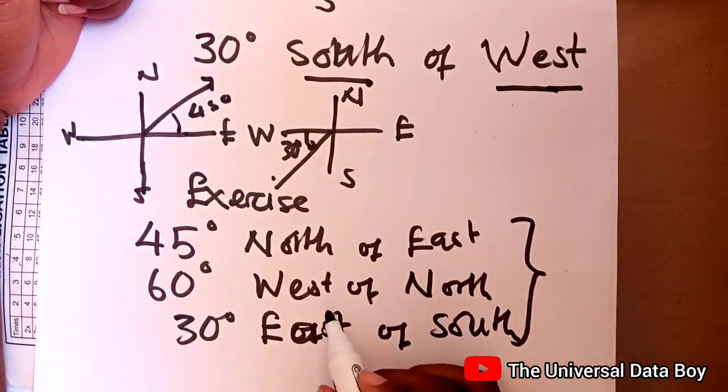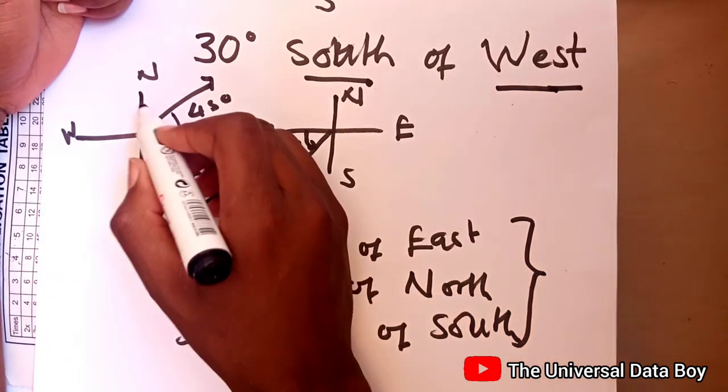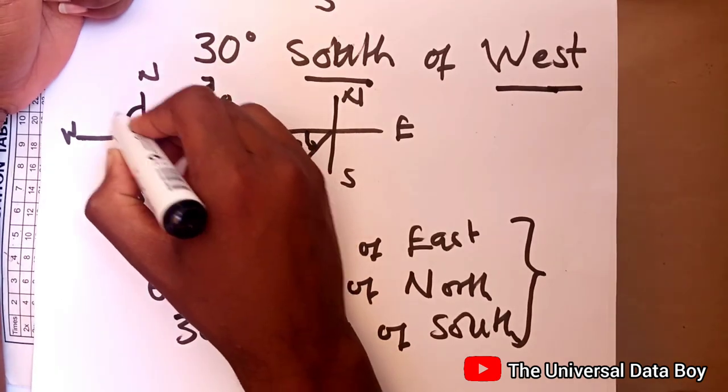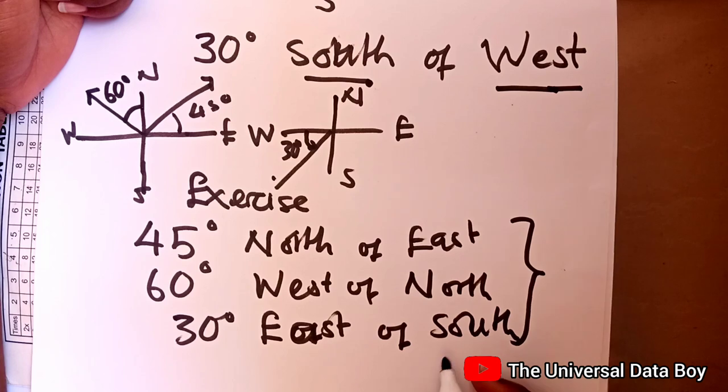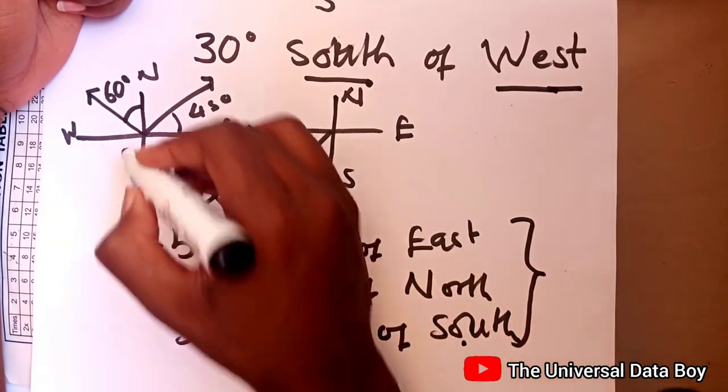Then the second one is 60 degrees west of north. So now we're going to go to the north, then we'll start going to the west. So we have this at 60 degrees. Then east of south, we're going to have the south. So we're standing at the south, then we're going to the east by 30 degrees.